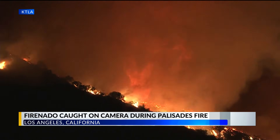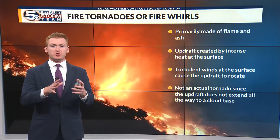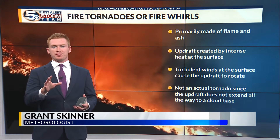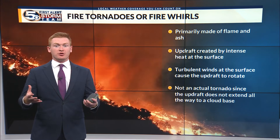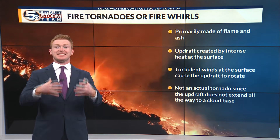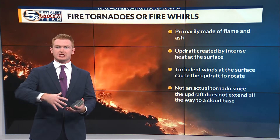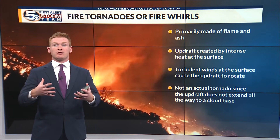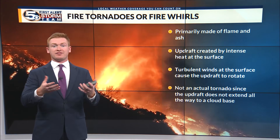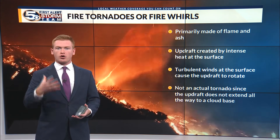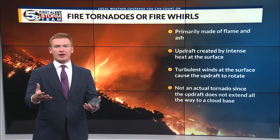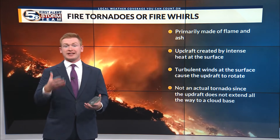Right. While they may look similar to a tornado associated with a thunderstorm, there is a key difference between the two. Fire tornadoes or firenadoes form due to two key factors. One factor is the combustion process that actually creates fire and releases large amounts of heat. This heat released into the atmosphere causes an updraft. The second factor is strong turbulent winds. With the case of the Palisades Fire, the Santa Ana winds are likely to blame for that turbulent flow.